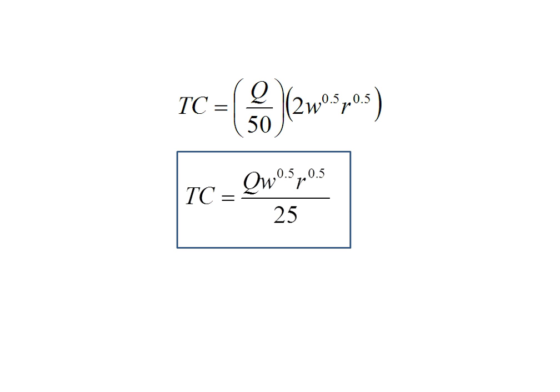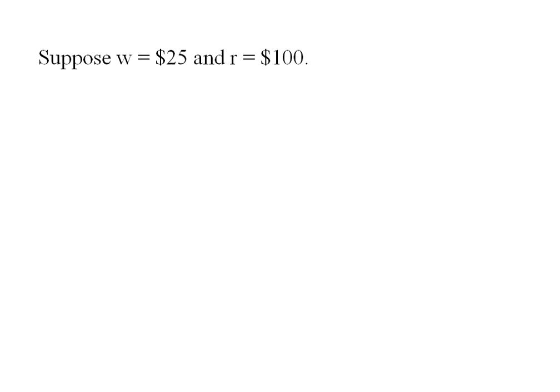This is for the long run where we can choose both labor and capital. Let's suppose we've got a wage rate of 25 and the rental rate of capital is 100. I can plug that information in and get the particular cost curve for that wage and capital price.